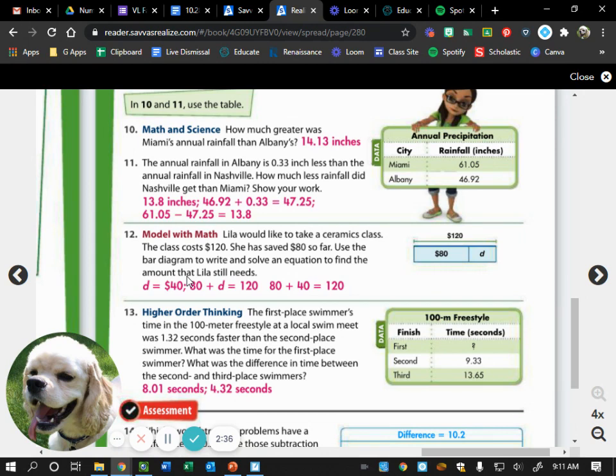Yes, Will. We also did $10. Yes, we did also do $10. I'm sorry about that. I don't have my clipboard in front of me, so I forgot we did number 10. So, how much greater was Miami's annual rainfall than Albany's. So, we would have taken 61.05 and subtracted 46.92 from it. You should have wound up with 14.13 inches. Now, you need to make sure you have that unit. If you don't have that unit, it could be marked wrong. So, please make sure you have your unit.